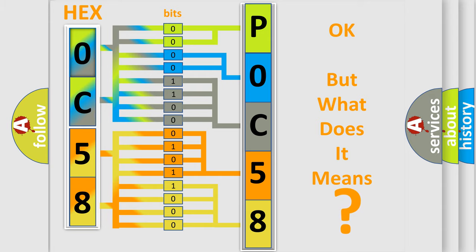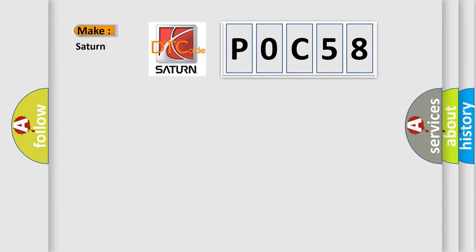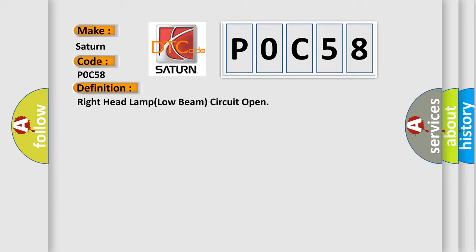So, what does the Diagnostic Trouble Code P0C58 interpret specifically for SAT and car manufacturers? The basic definition is: Right headlamp low beam circuit open.